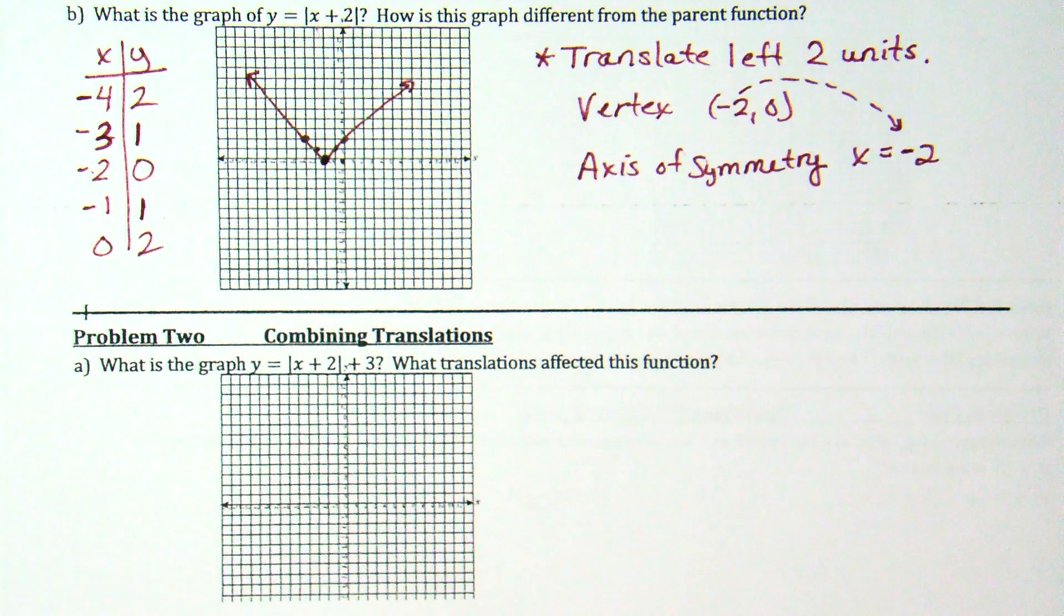Okay, so lesson 2-7, picking up where we left off yesterday. We had graphed in problem one our absolute value function. What shape is it? It's a V. In the first one up there, we had taken that V and moved it down. In the second one, we had taken that V and moved it left. What about example problem 2A here? Where are we going to take this, Carter?